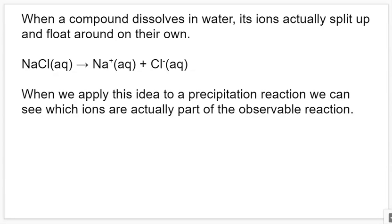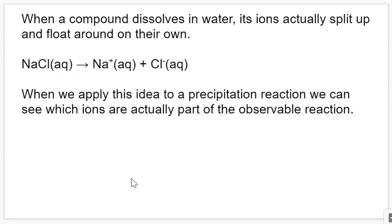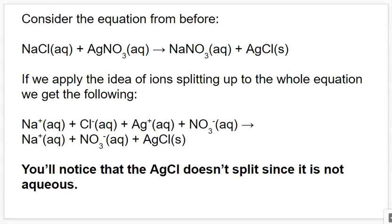When we think about how compounds dissolve in water, the ions actually split up and float around on their own. So if we have sodium chloride aqueous, what that actually means is that the sodium plus ions and the chloride minus ions actually split up and just float around on their own in the solution. And if we apply this idea to a precipitation reaction, we can split up all of our ions and see what is actually part of the observable reaction.